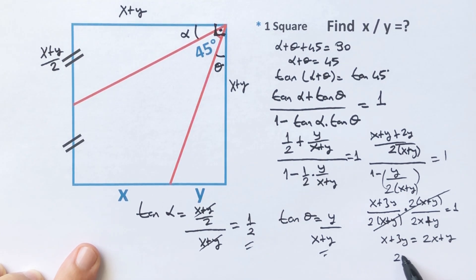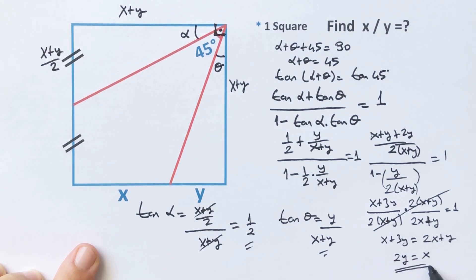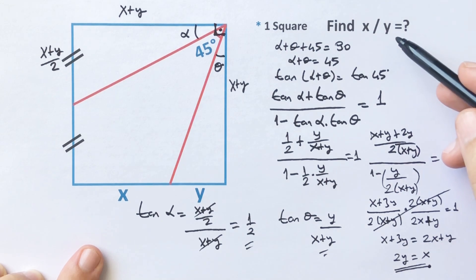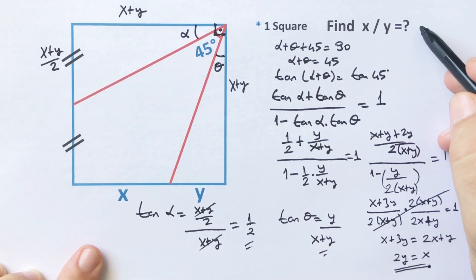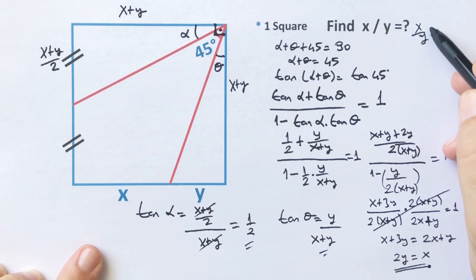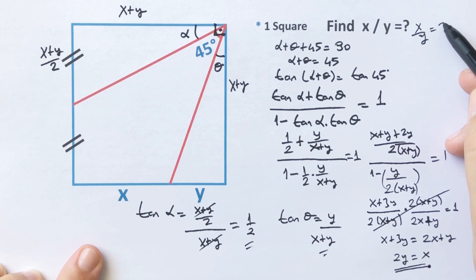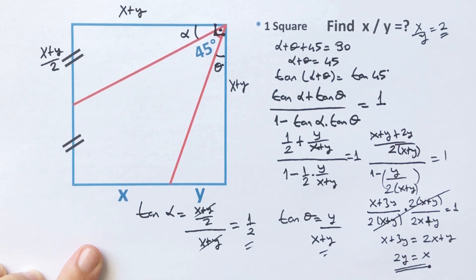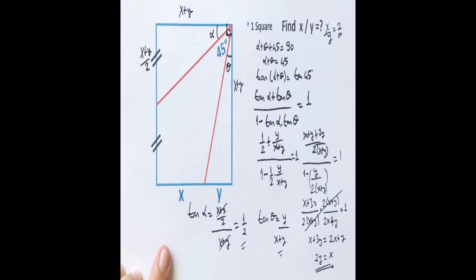So 2y equals x, which means x over y equals 2. That was the first method. Now we will calculate the ratio x over y using a second method.